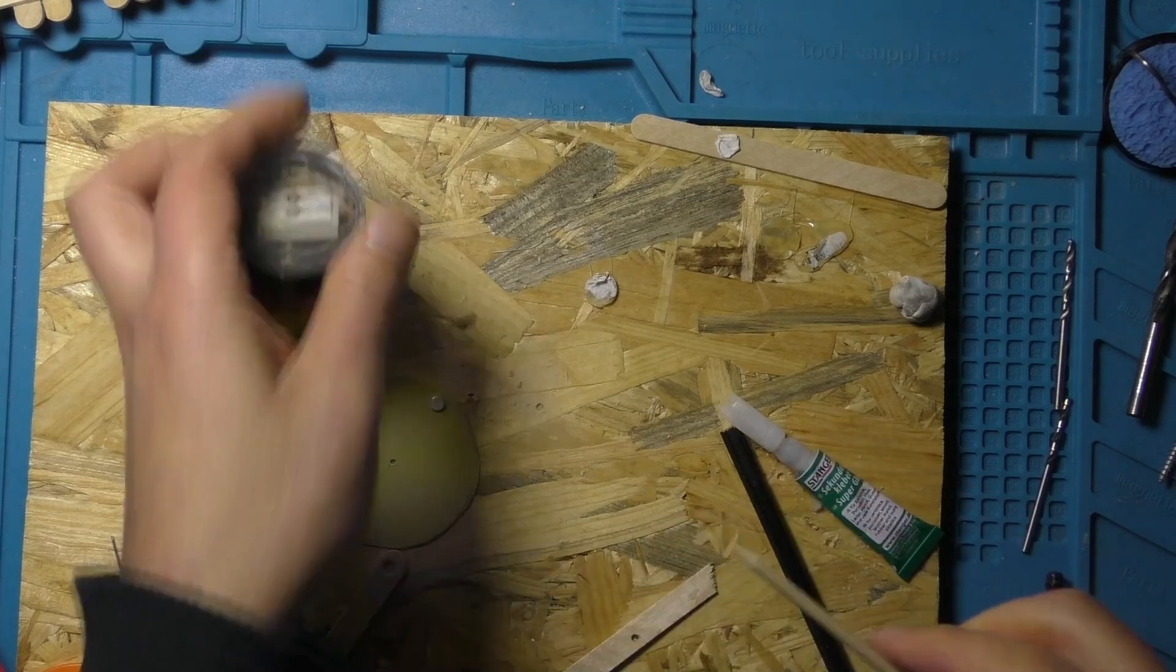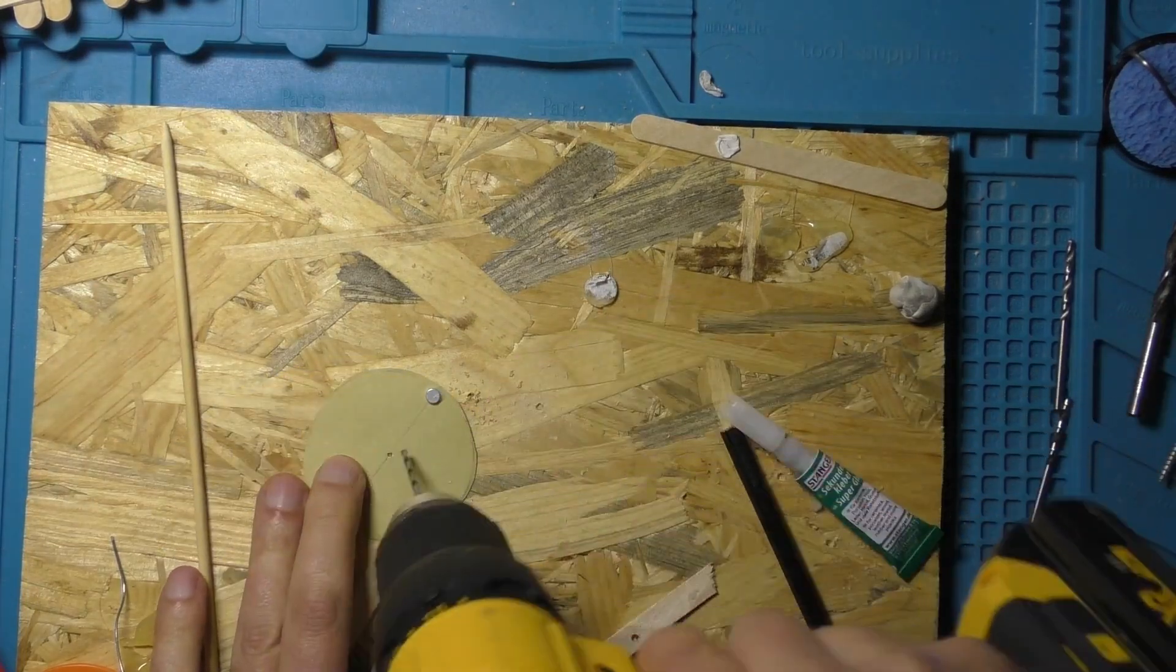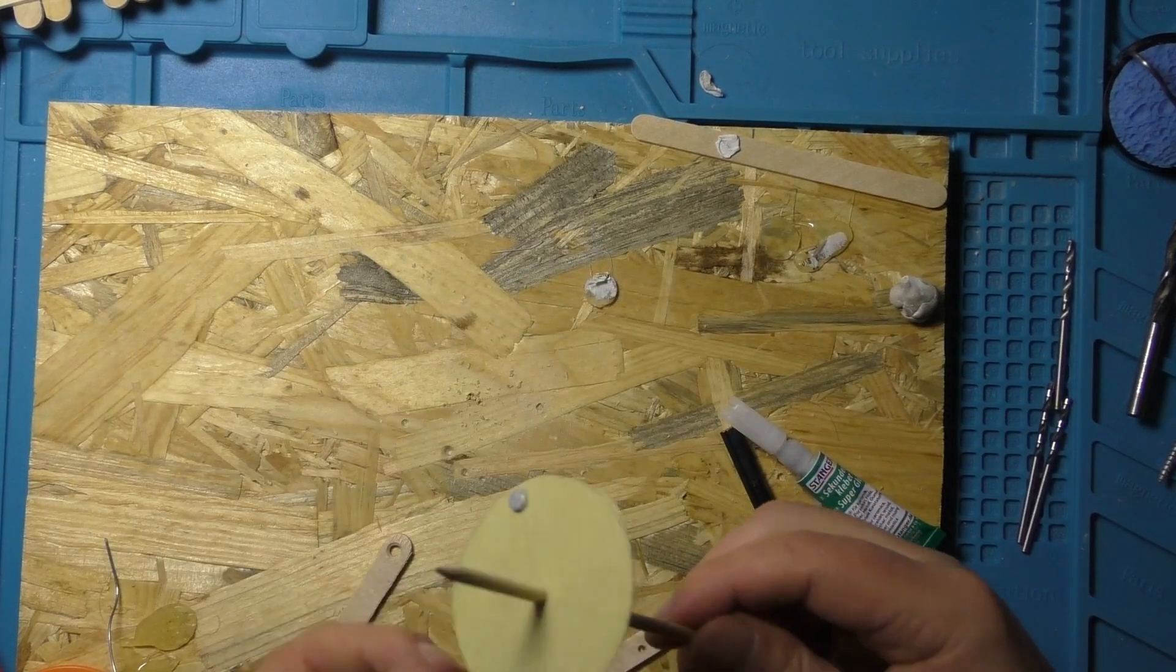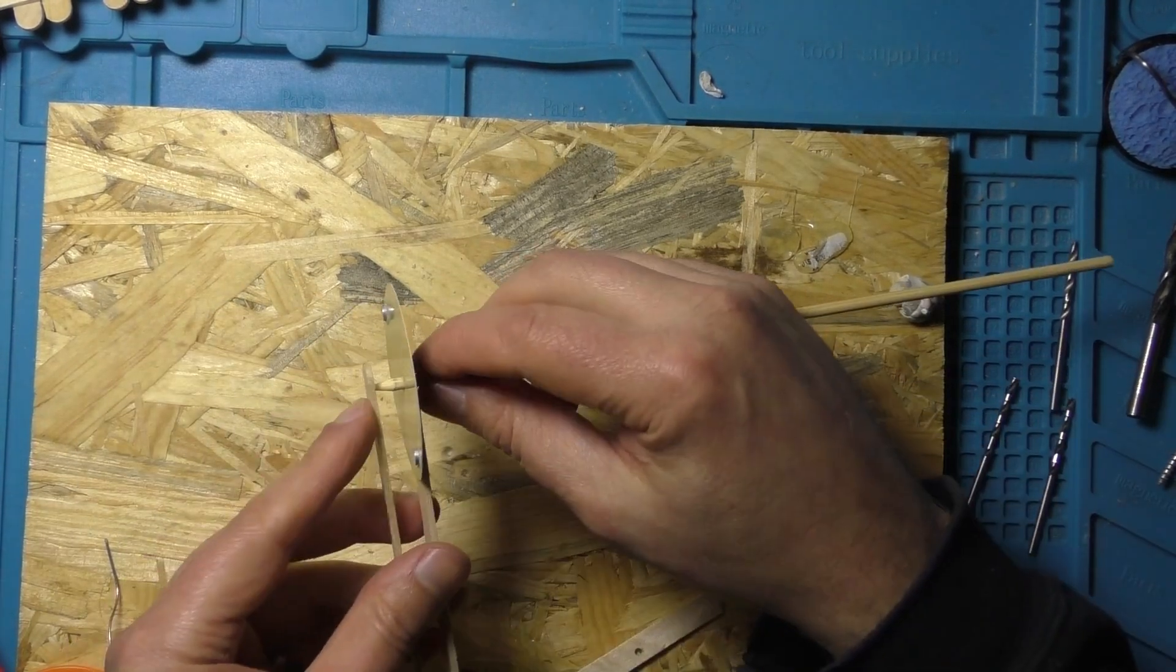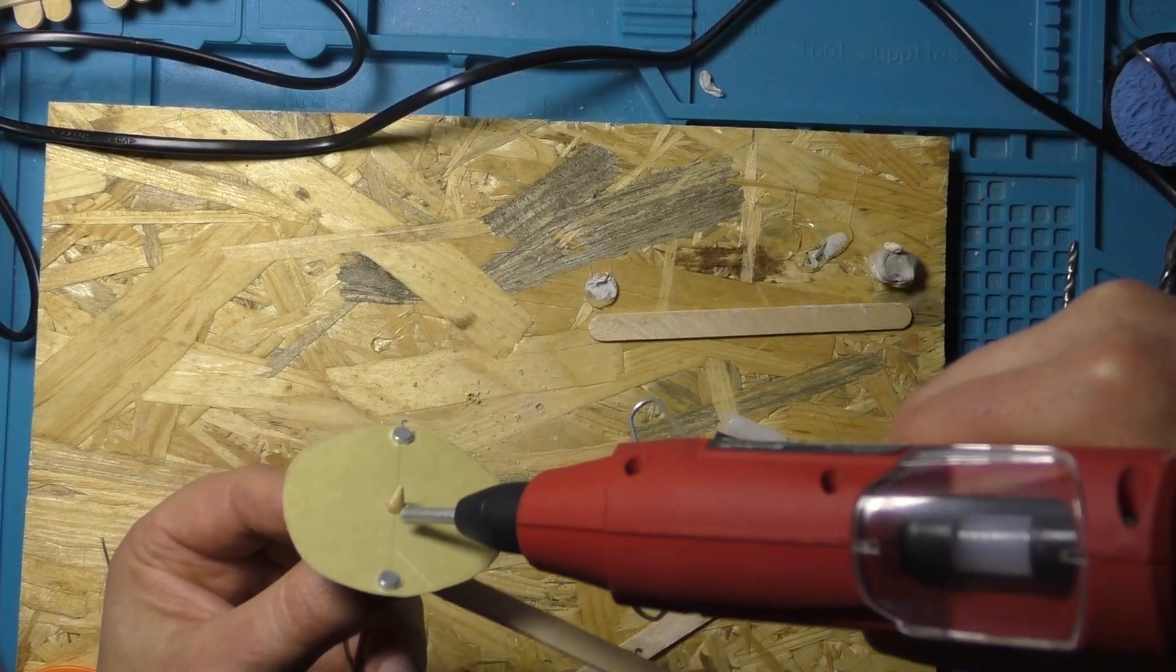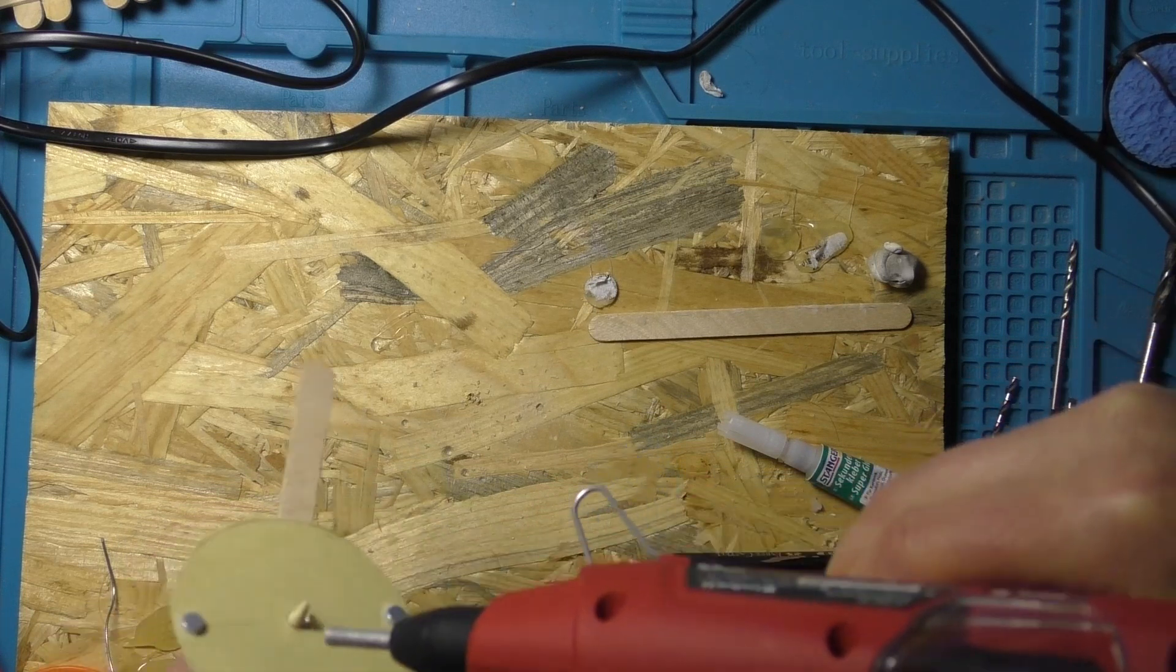And I'm making an axle. What I was thinking with sharpening it to a point with a pencil sharpener is that if that sits in a little hole, then that will be a low friction joint.